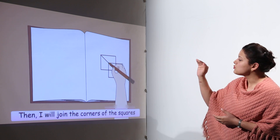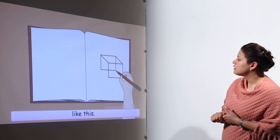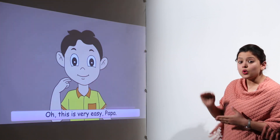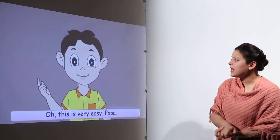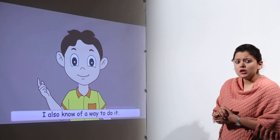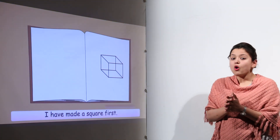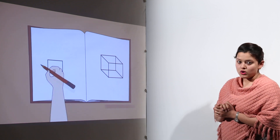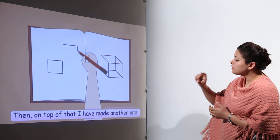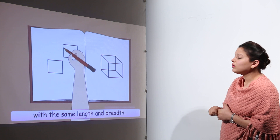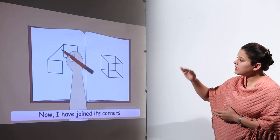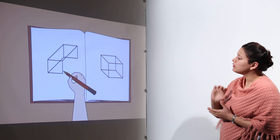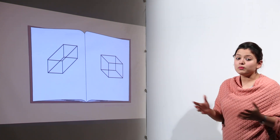The father made two squares — one square and another square placed behind each other — and joined all the corners to complete the shape. Then Chinu came up with another idea: he drew one square, then another square of the same length and breadth, and joined all the corners. The floor map was ready.